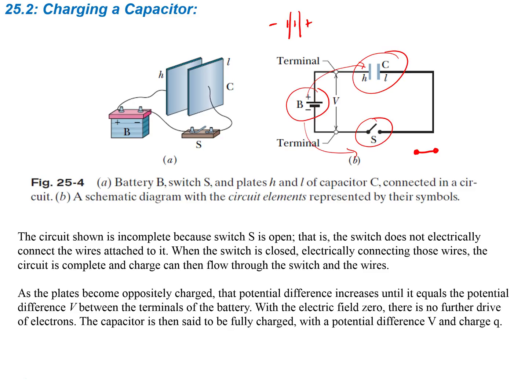With the electric field zero, there's no further drive of electrons. Once this capacitor gets charged, it's going to basically stop the flow of electricity in the circuit, because there's nowhere for the charge to go. If you fully charge a capacitor, there's nowhere for that charge to go. The capacitor is then said to be fully charged with a potential difference V and a charge Q — the potential difference in this case is just going to be whatever the potential of the battery is.